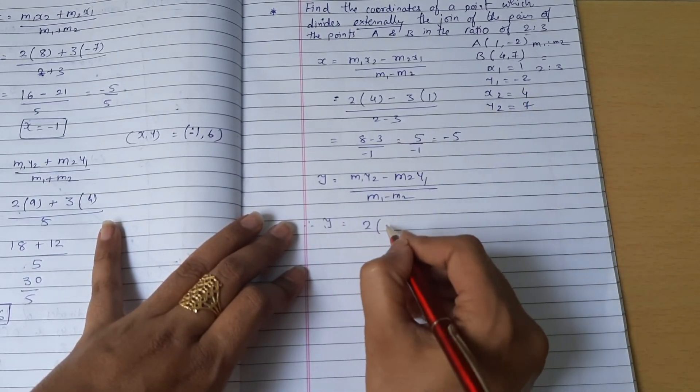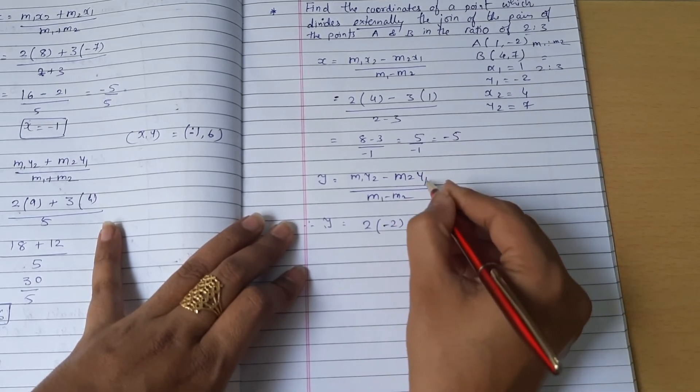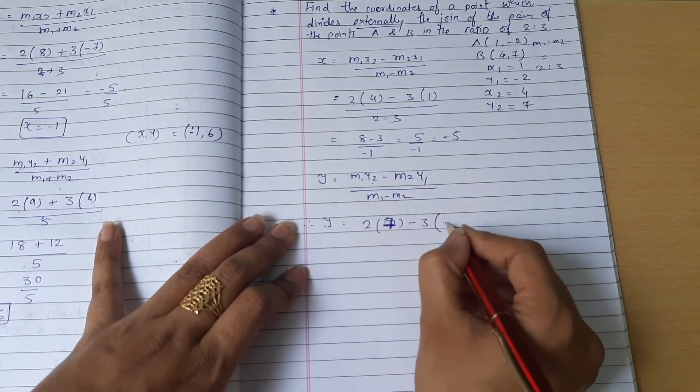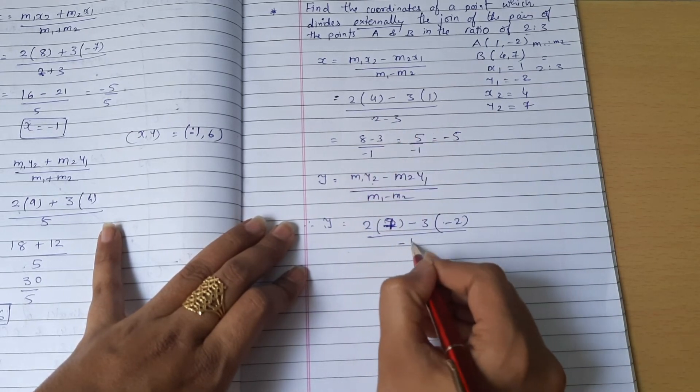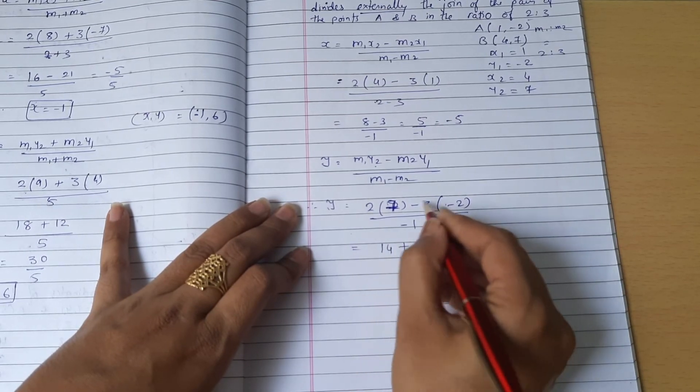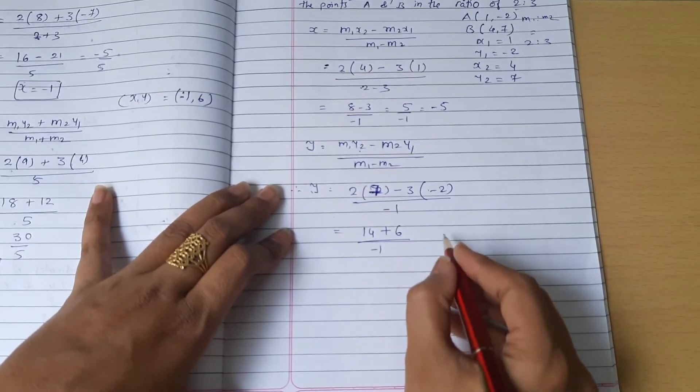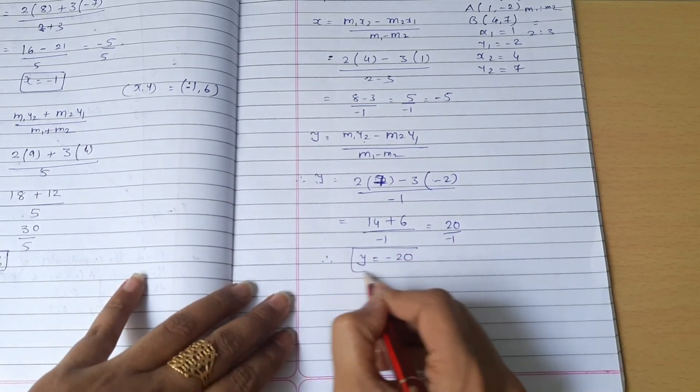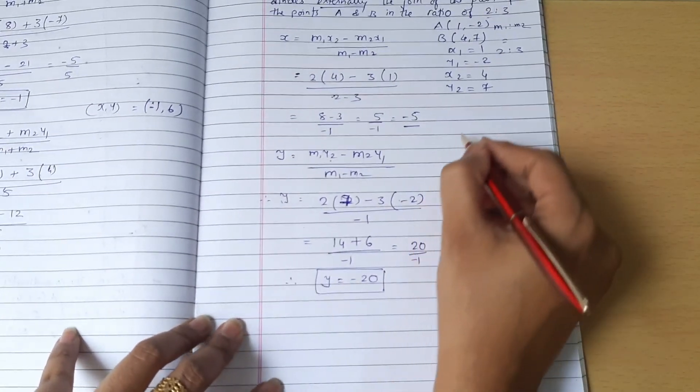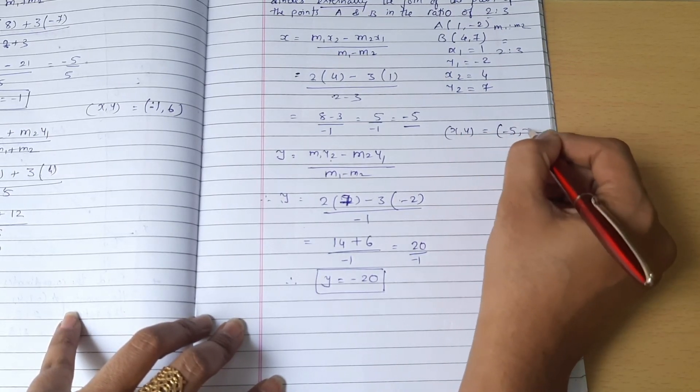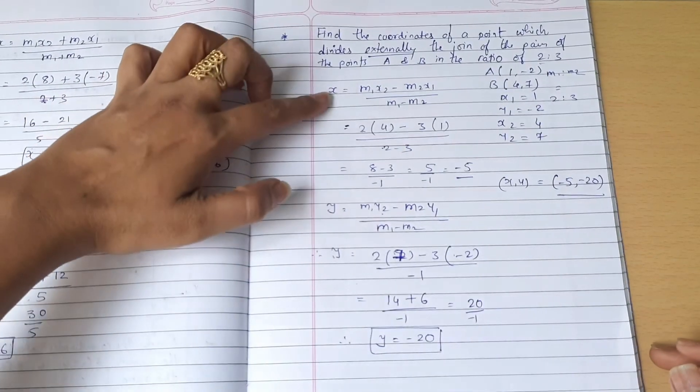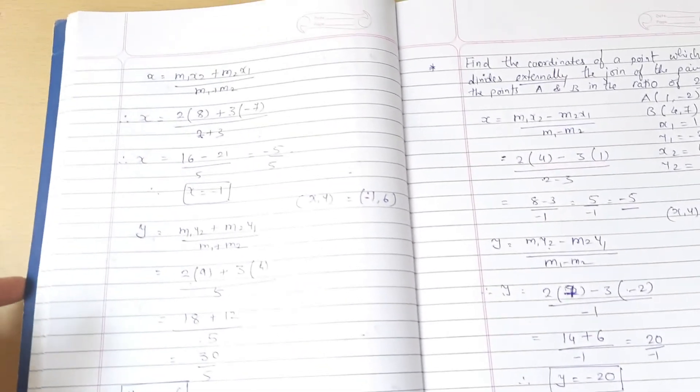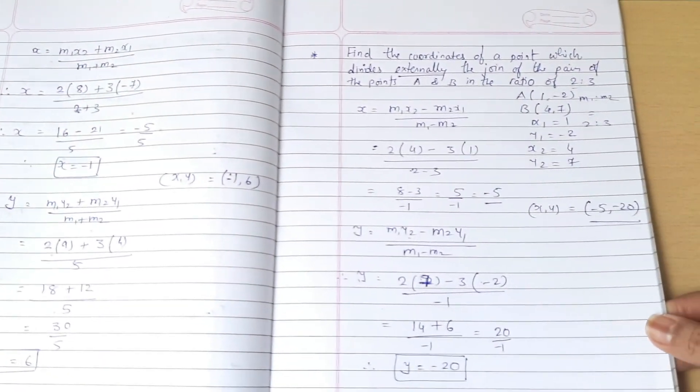Now y equals m1 y2 minus m2 y1 divided by m1 minus m2. m1 is 2, y2 is 7, minus m2 is 3, y1 is minus 2, divided by 2 minus 3 that is minus 1. This is 14 minus minus plus 6 divided by minus 1, so 20 divided by minus 1, that will be minus 20. So the coordinates are minus 5 and minus 20. This is finding the coordinates of a point which divides the line externally. When a point divides internally, we use the plus equation. This is it, thank you.